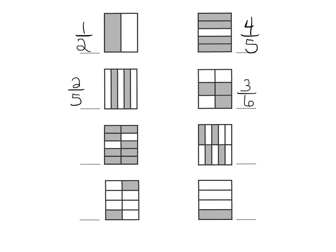Let's see right here — one, two, three, four, five, so five times two is ten. We can see that eight-tenths are shaded in. And over here, one, two, three, four, five — and then five down here, so that's ten — and we can see that four out of the ten are shaded in.